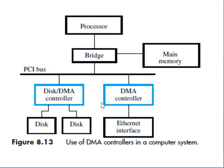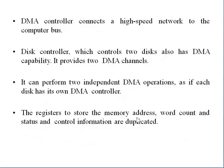This is the DMA controller used in a computer system. A bus is present, and the DMA controllers are connected to this bus. The main memory and the processor are connected to this bus, with a bridge interface used between them. For the disk controller, two disks are connected to one DMA controller, and a separate network interface is connected to another DMA controller, which connects a high-speed network to the computer bus.